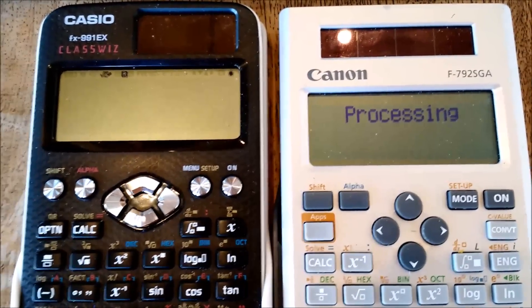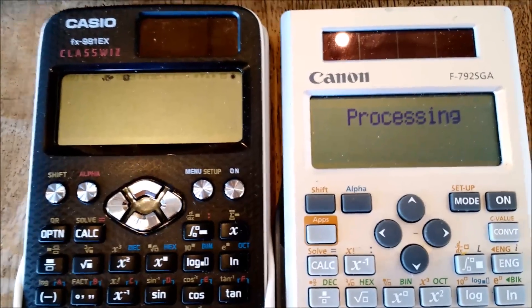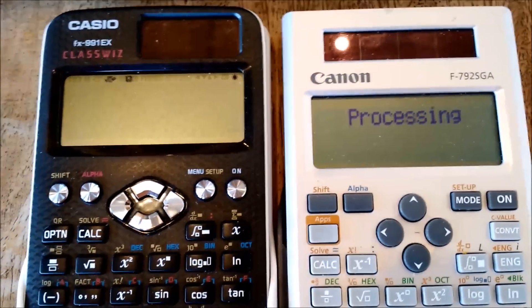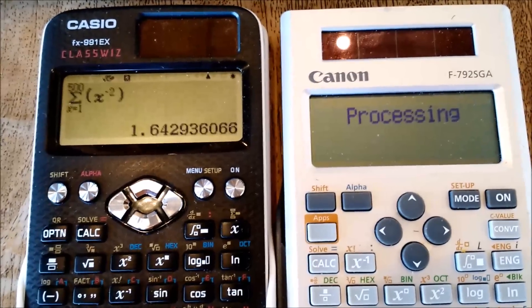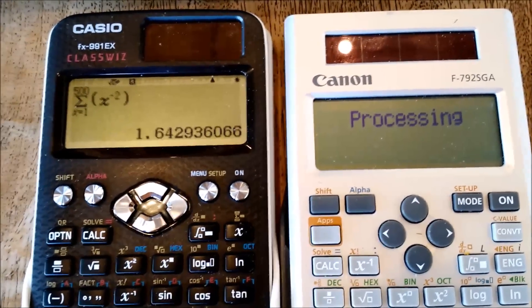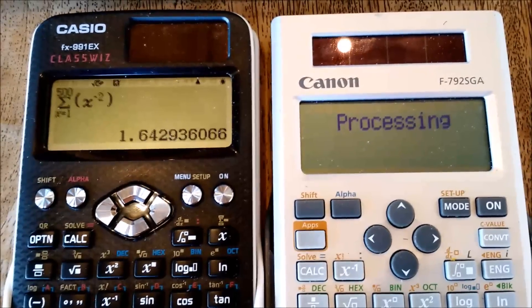It's also going to demonstrate how much of a faster processor the Casio Classwiz has. As you've seen, the answer just popped up and the Canon is still working through its process.